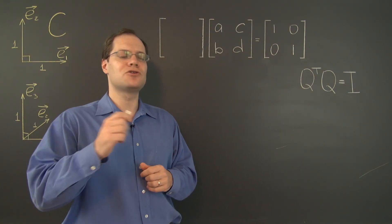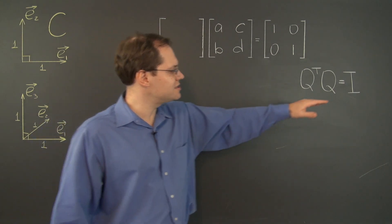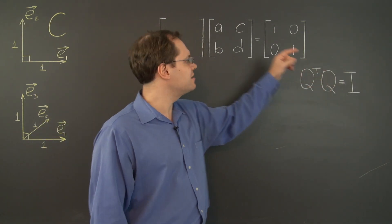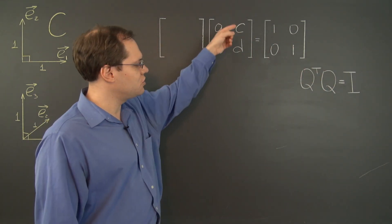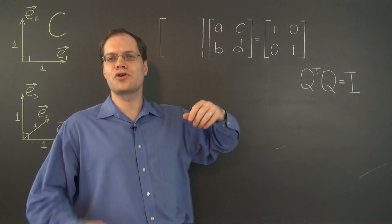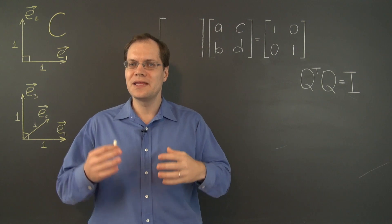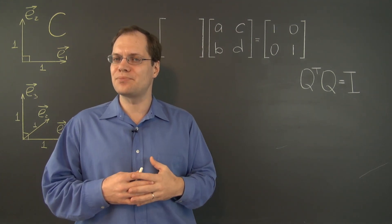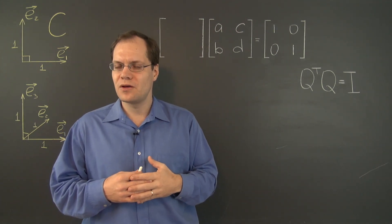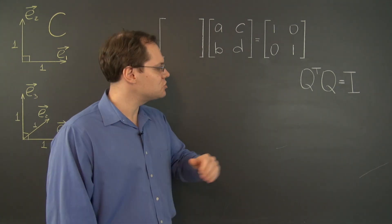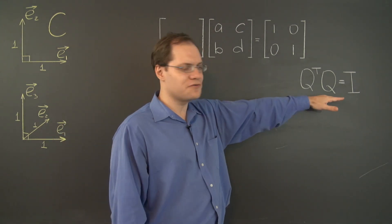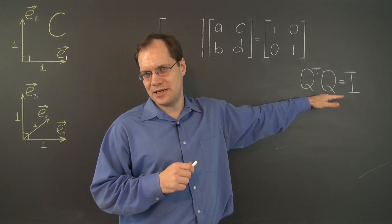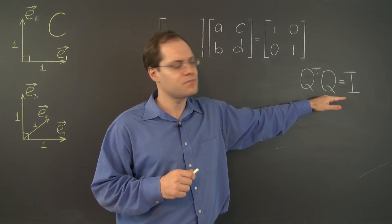We already know that the definition of an orthogonal matrix implies that the columns of Q are orthonormal in the sense of the algebraic dot product. But let us work directly from this definition and rediscover what that statement means.